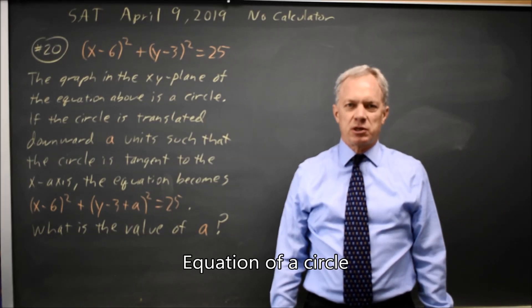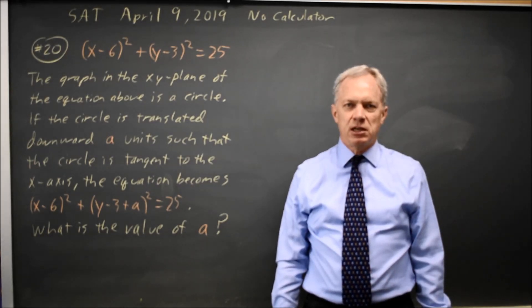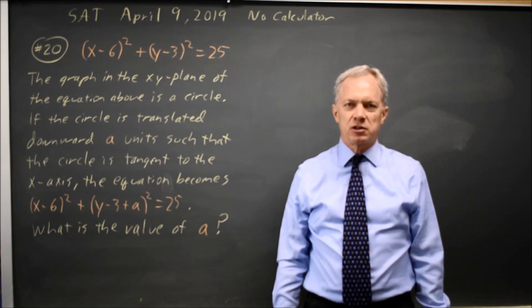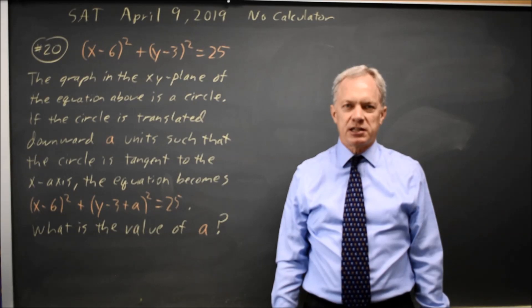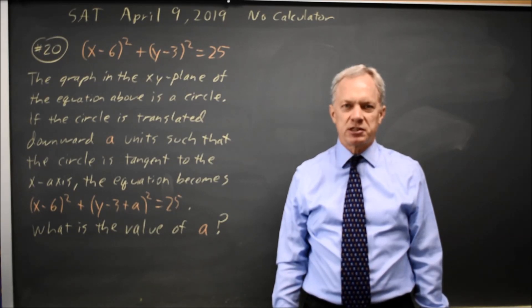This is calculator question number 20 from the April 2019 SAT. College Board gives us the equation of a circle, and they ask if we translate this down until the circle is tangent to the x-axis, how far down do we have to translate it?